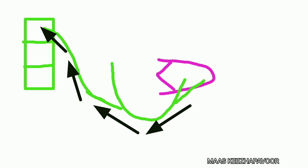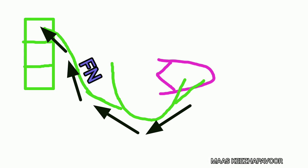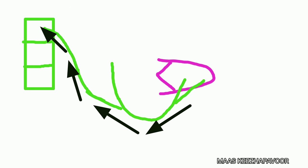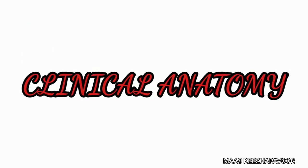From the chorda tympani nerve, the fibers enter the facial nerve and finally reach the cranial part of the nucleus tractus solitarius in the medulla oblongata.